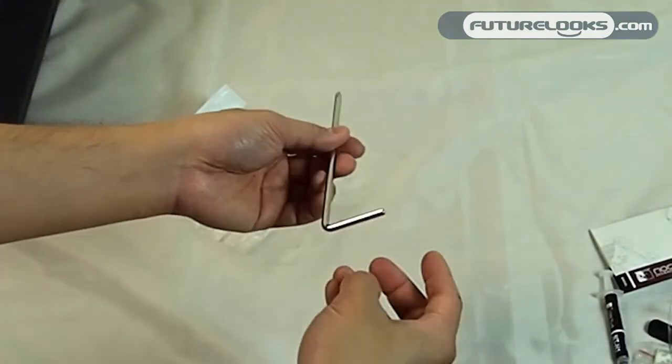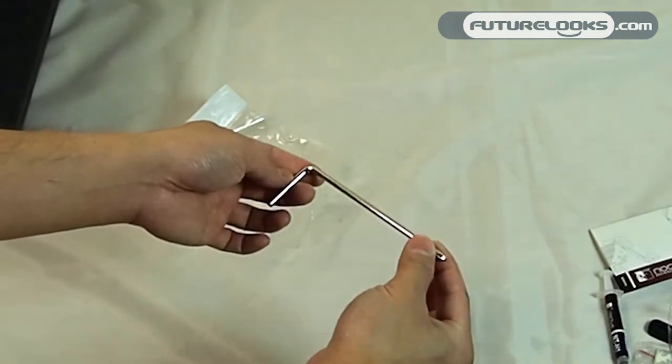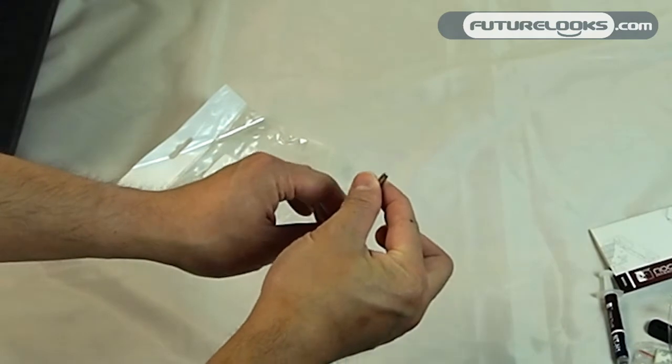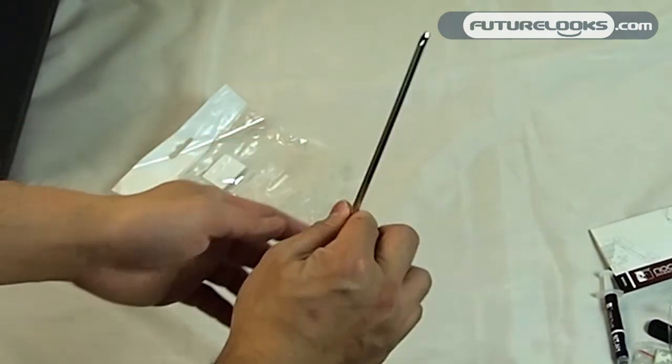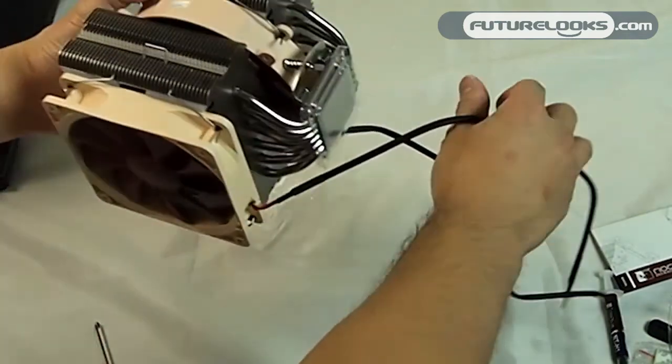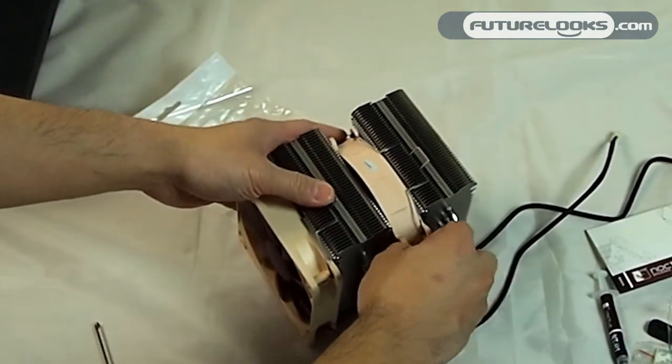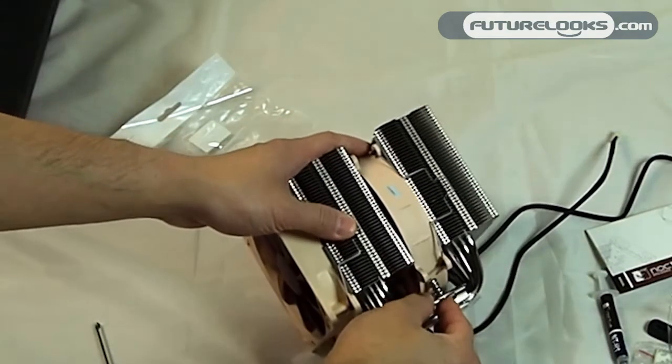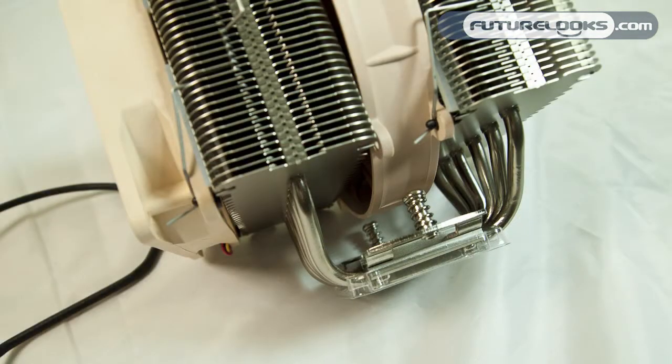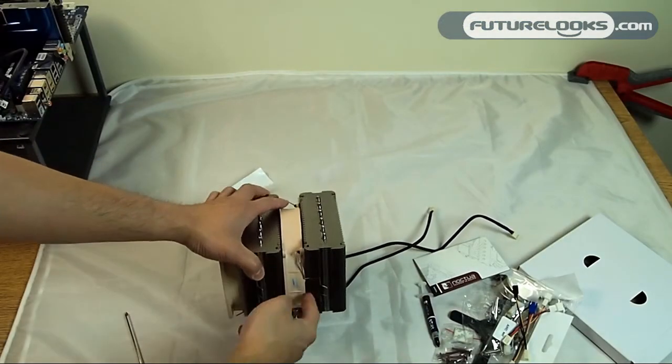To assist with installation, Noctua has also included a screwdriver with a Phillips head on the tip to aid in installation. You'll see why this is important because if I bring the cooler back here, you'll see that on the base here, this base has two pieces of hardware that are blocked by the fan.